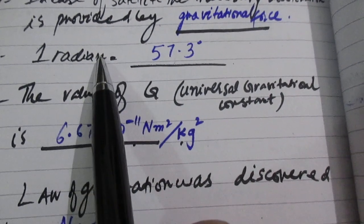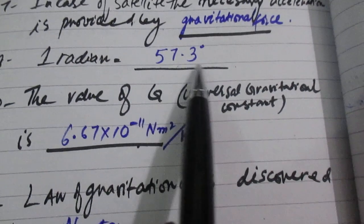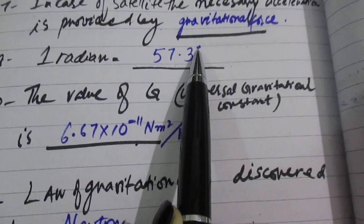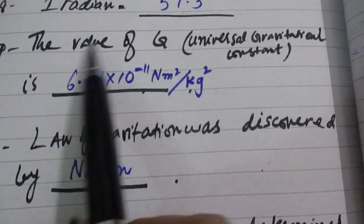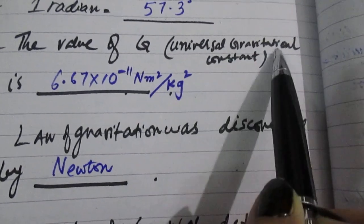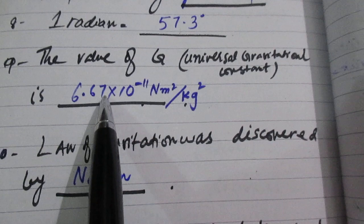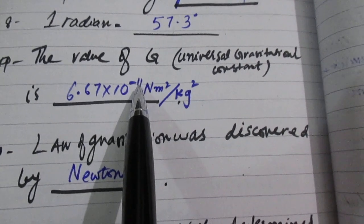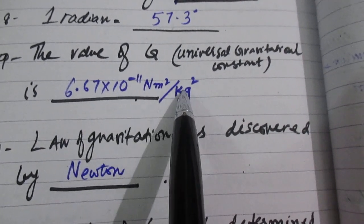One radian is equal to 57.3 degrees. The value of G, universal gravitational constant, is 6.67 × 10^-11 Nm²/kg².